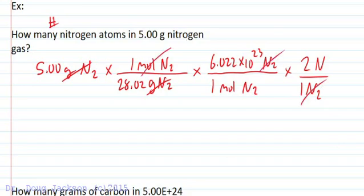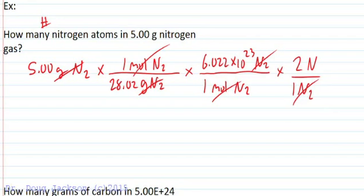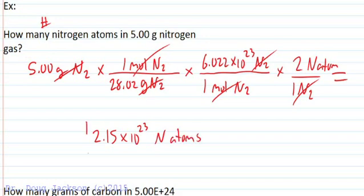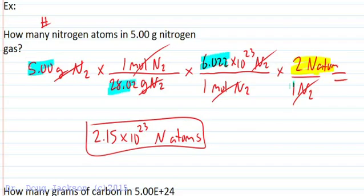So we can get rid of nitrogen, we can get rid of moles of N2 by canceling what's on the bottom. And so what we've got to do now is what's left. When we multiply everything out and divide everything out, we end up with a number. Divide our numbers to get the number to three significant figures because we're limited to three by this number, the given number: 2.15 times 10 to the 23rd nitrogen atoms. And the only unit we're left with is nitrogen atoms, and the number is found by dividing out and multiplying by all the numbers in our fractions.